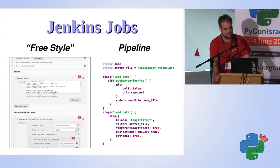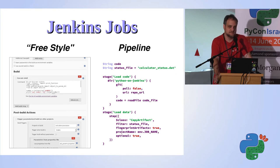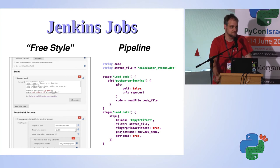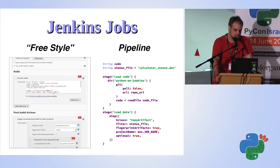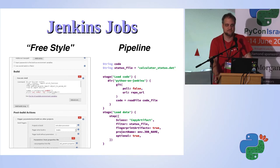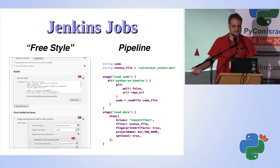Before I continue, let's talk a little bit about Jenkins job types. Jenkins has two kinds of jobs. One is called freestyle — it's the older kind. You use pretty much the Jenkins GUI to link together a bunch of plugins. It's rather rigid: it dictates that everything runs on one slave machine — first you clone the code, then you run build steps, then post-build steps.